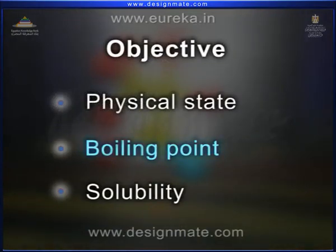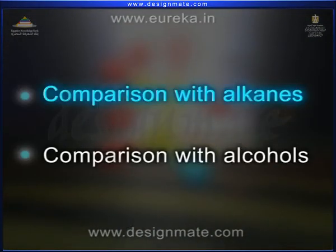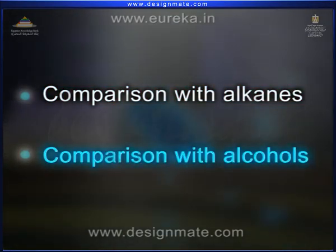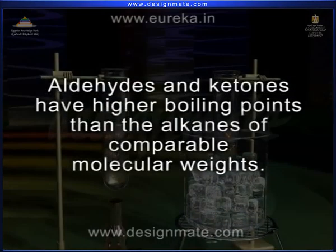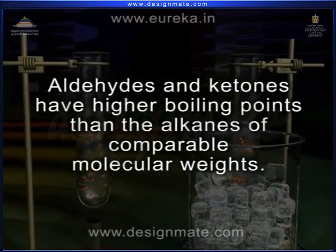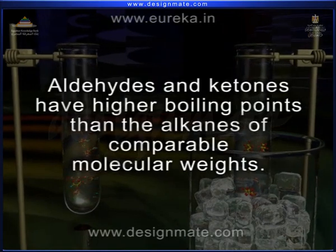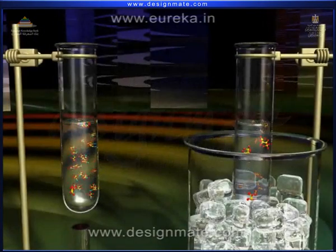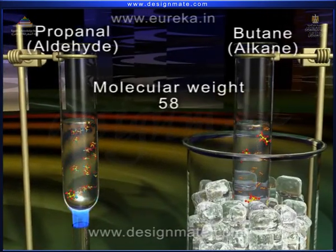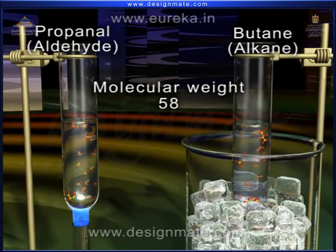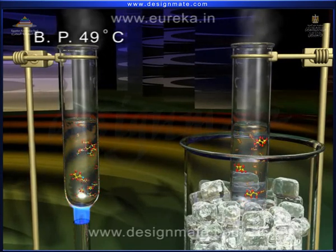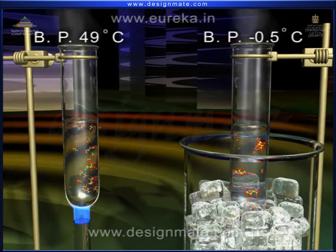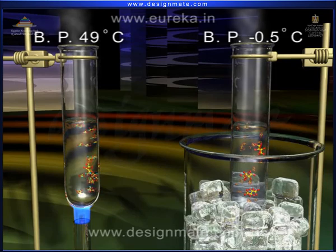Boiling Point. Generally, aldehydes and ketones are compared with alkanes and alcohols. Aldehydes and ketones have higher boiling points than the alkanes of comparable molecular weights. For example, the molecular weight of propanal and butane is 58, but the boiling point of propanal is 49 degrees centigrade, and for butane it is minus 0.5 degrees centigrade.